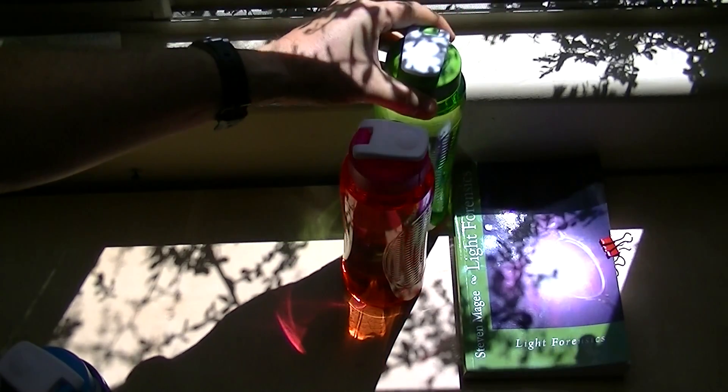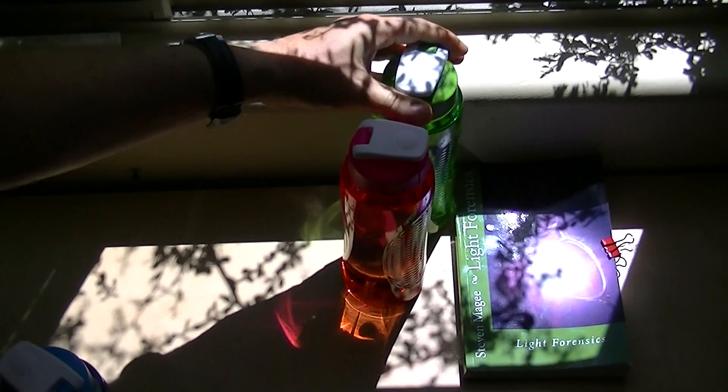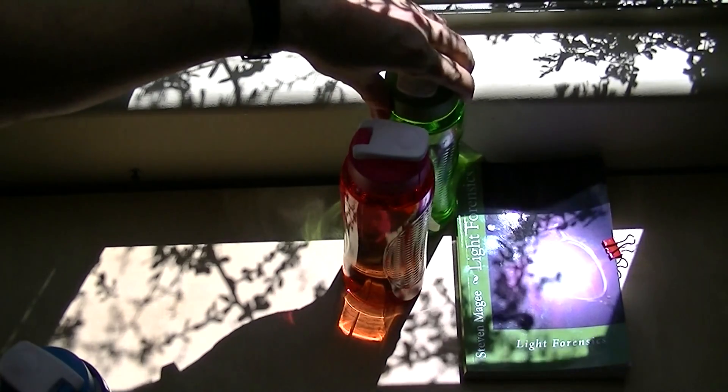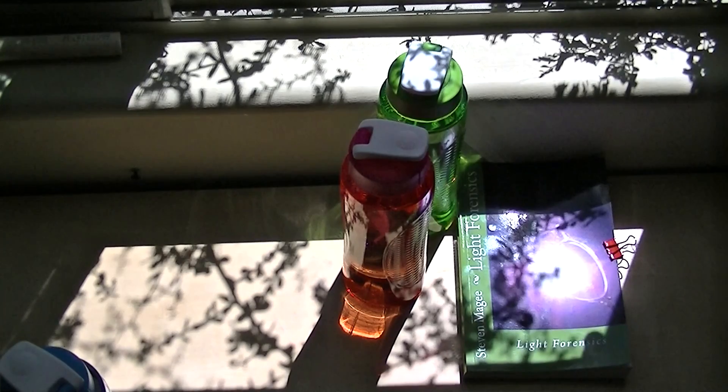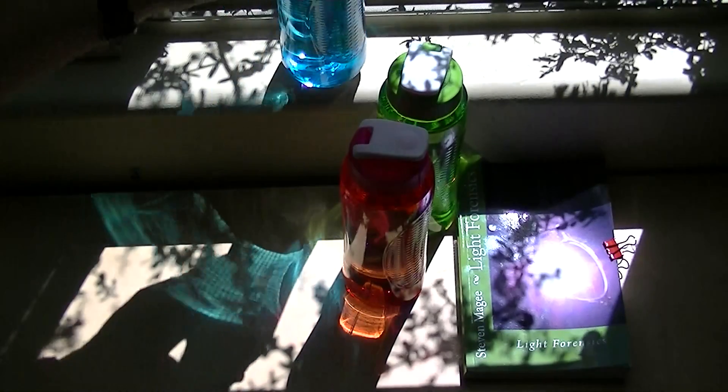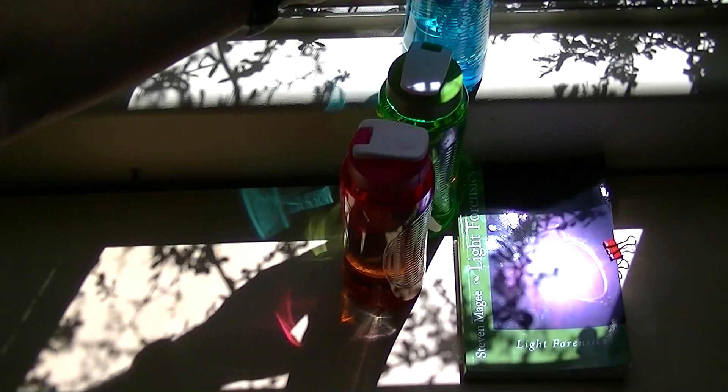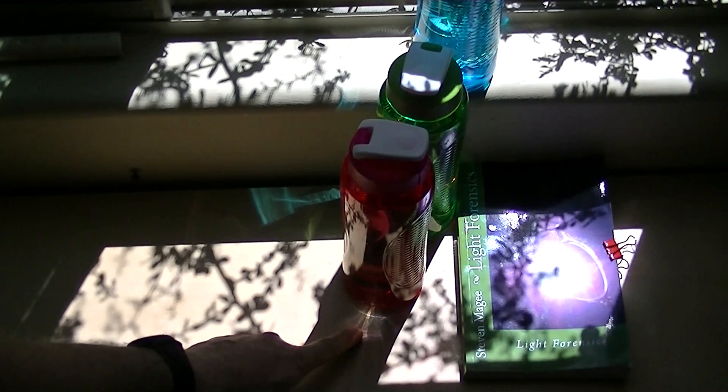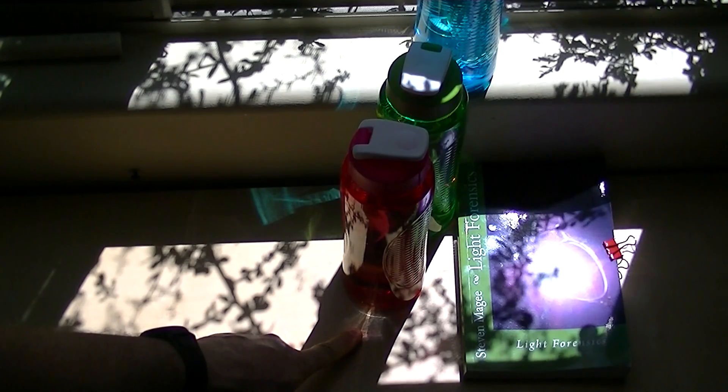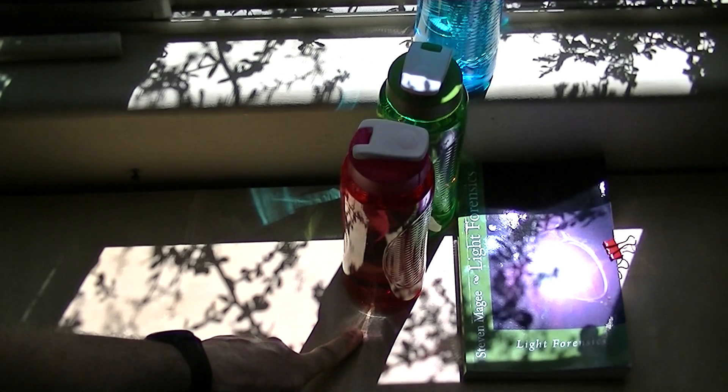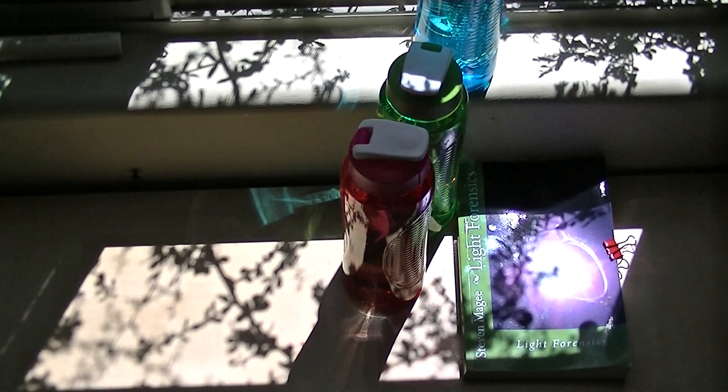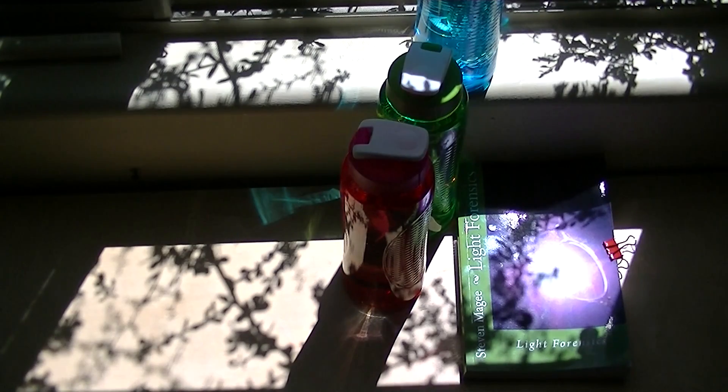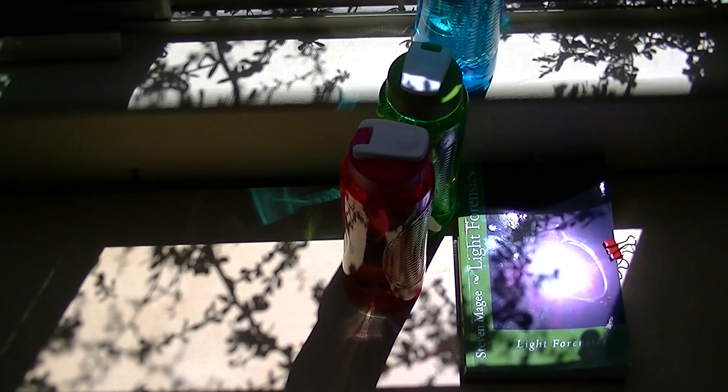The question arises as to how these colors combine when all three are mixed together. Let's see what happens. We have all three colors mixed together, and this is the light that it produces. We get what looks like white light. That's mixing of three primary colors to produce something that resembles white light.